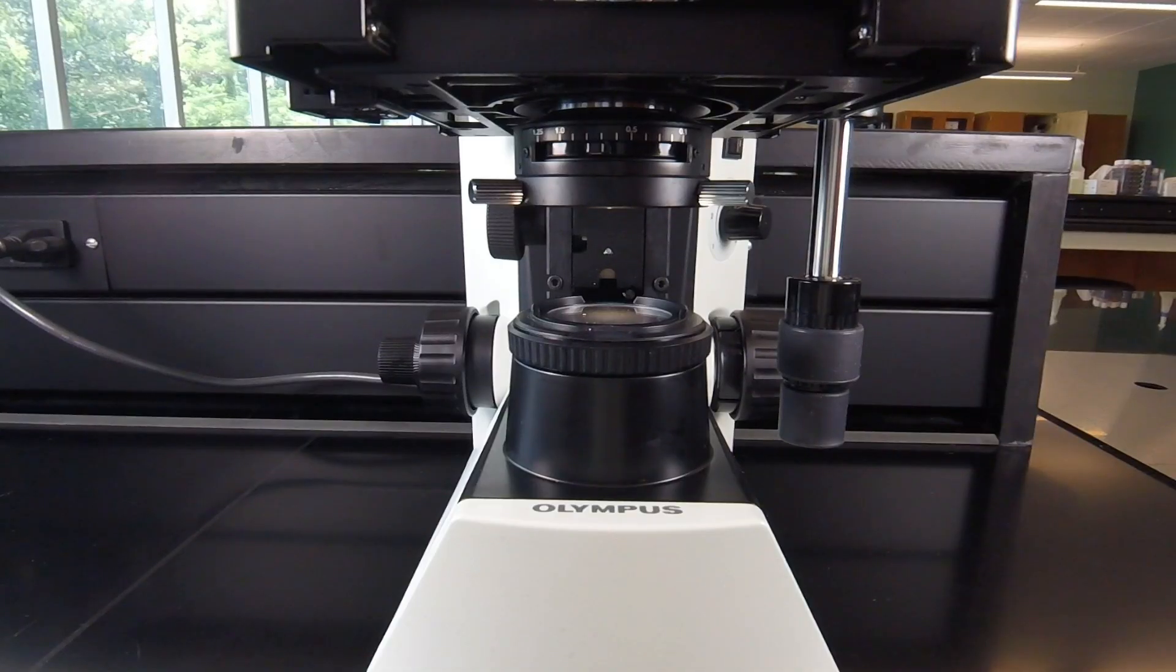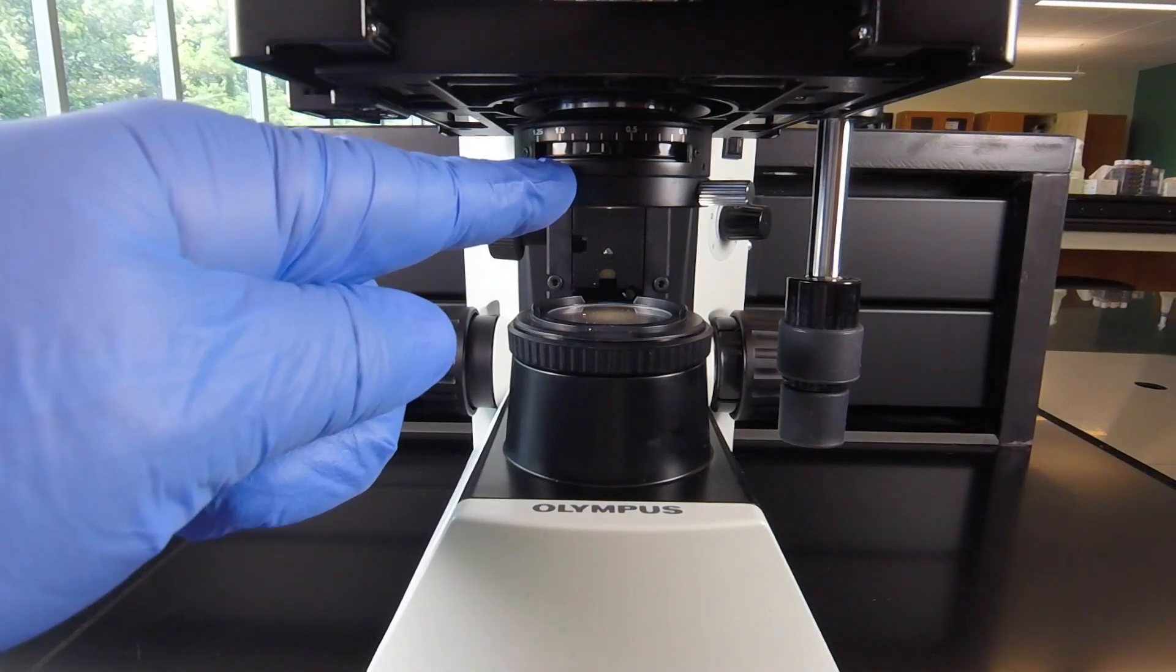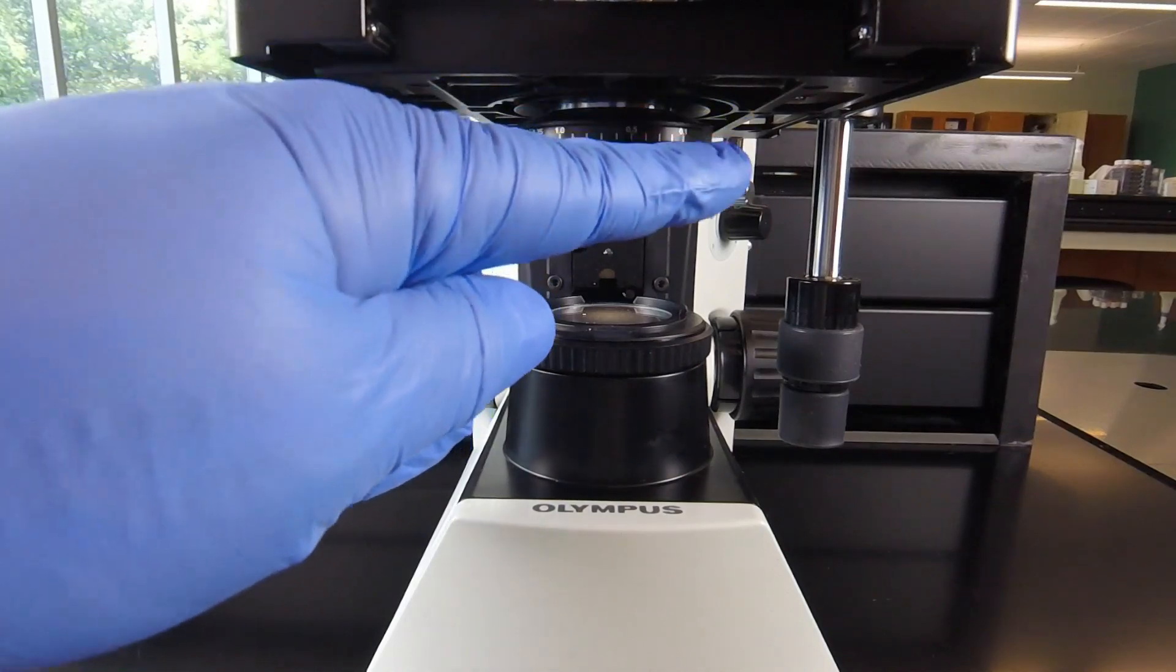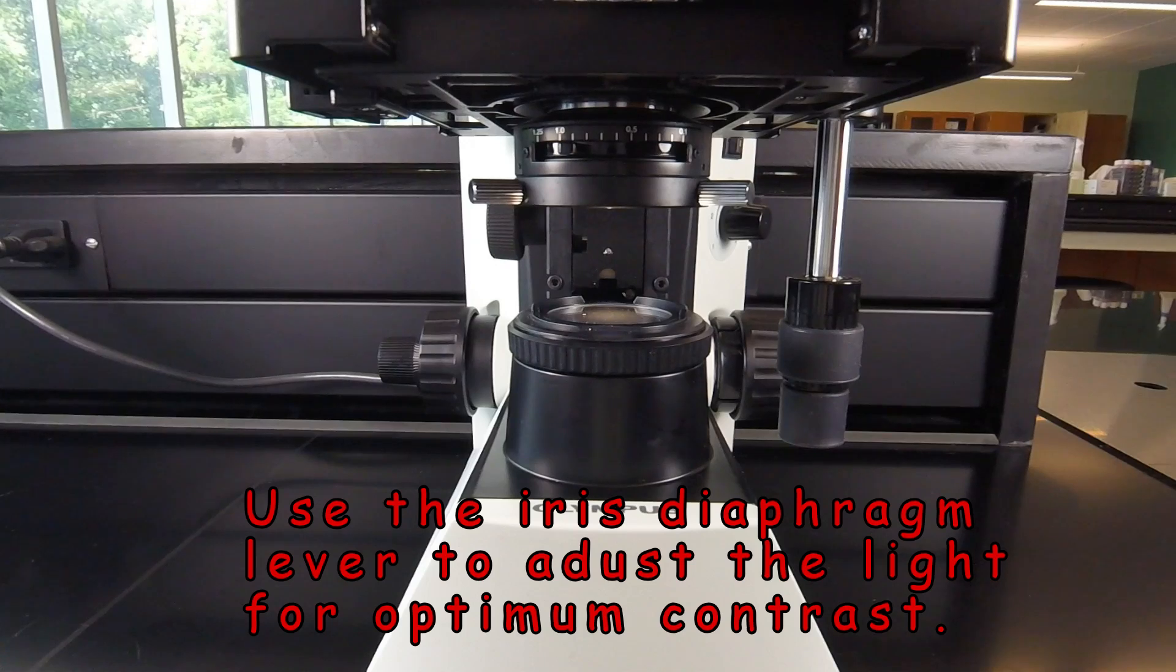Finally, once you have the image in focus, we do want to play with the light a little bit. To do that, we use the iris diaphragm lever under the stage. The lever that slides to the left and to the right controls how much light comes through. This is what really creates contrast and allows us to see the image more clearly.